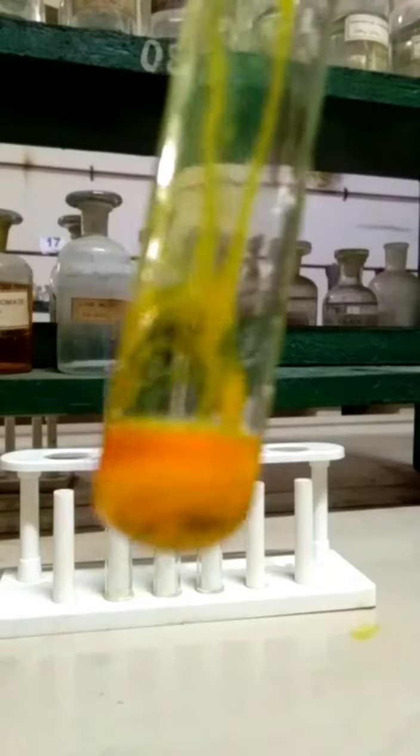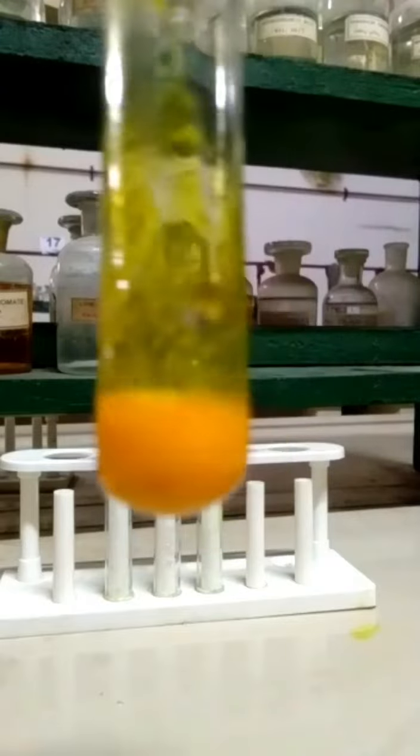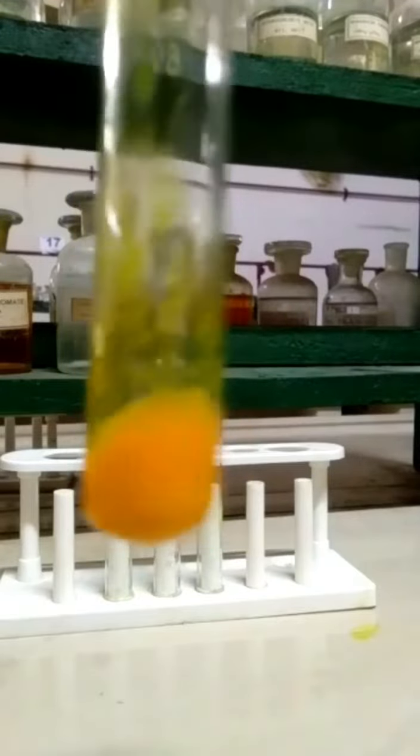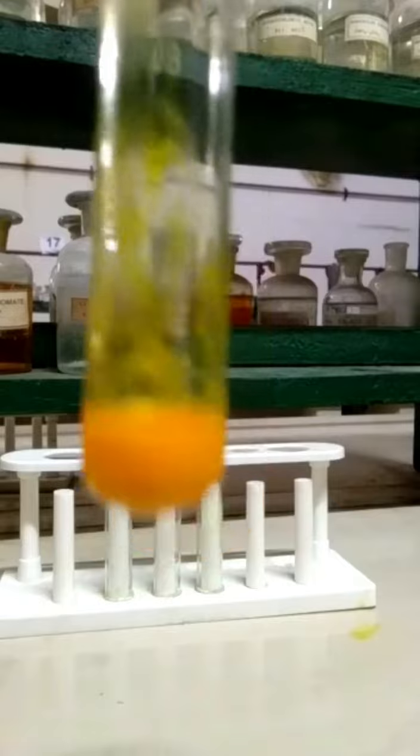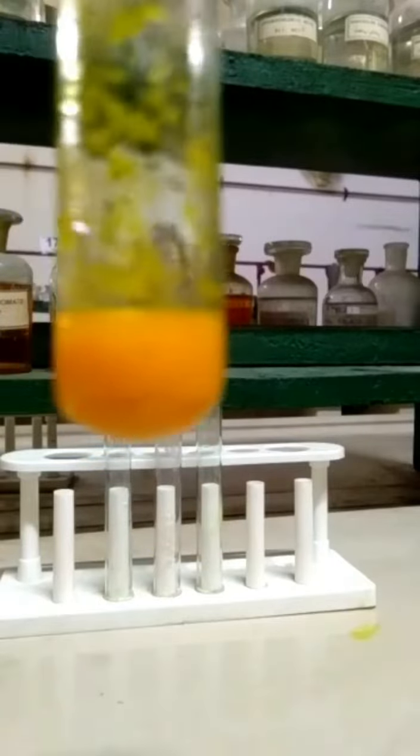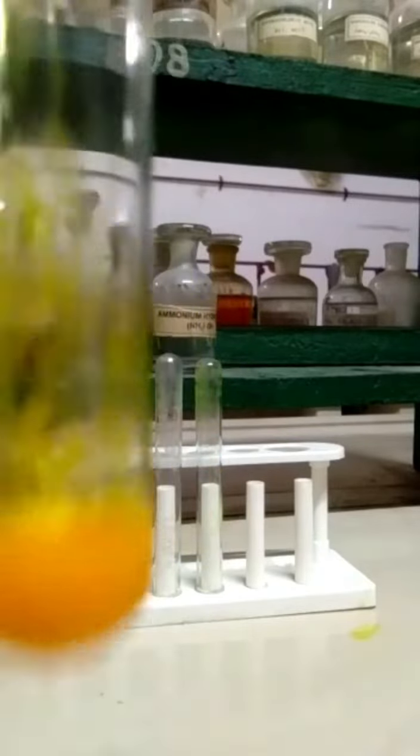Yellow-orange precipitate will be obtained, which confirms the presence of carbonyl group in the given organic compound. Here I have added an organic compound, which is acetone, into the DNP reagent and yellow-orange precipitate was obtained.